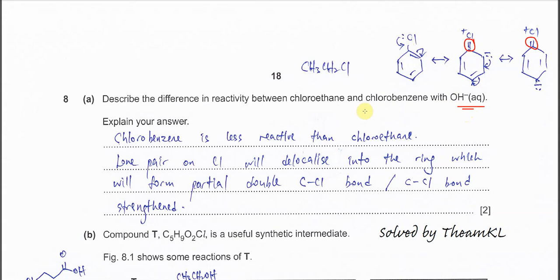So we know that chlorobenzene is less reactive than chloroethane. This means chlorobenzene is harder to undergo hydrolysis compared to chloroethane. Chlorobenzene is less reactive than chloroethane — this is the key statement because the question asks you to describe.